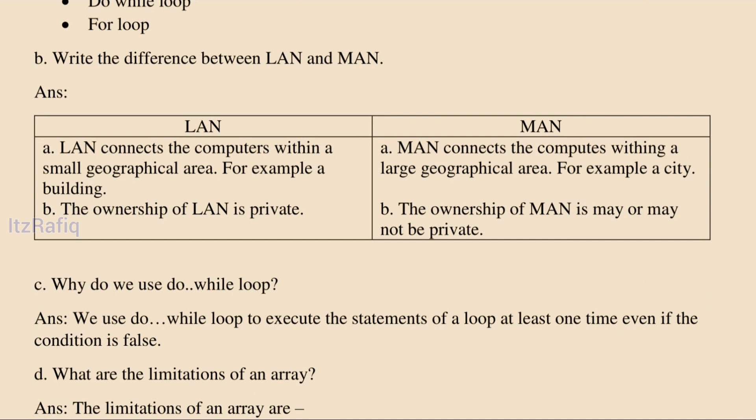The difference between LAN and MAN: LAN connects computers within a small geographical area, for example a school computer lab. MAN connects computers within a large geographical area, for example cable TV networks. LAN ownership is always private — schools and colleges own them and do not allow outside access. MAN ownership may be private or sometimes public.